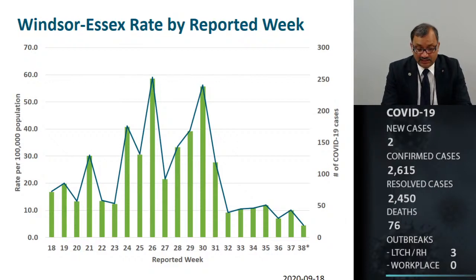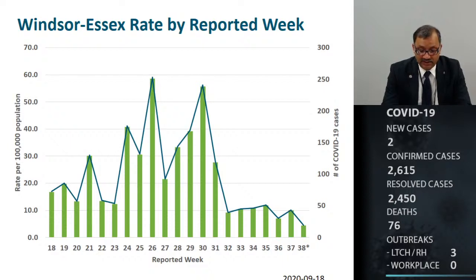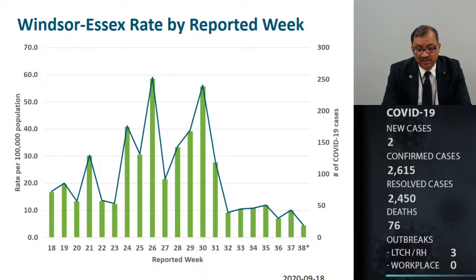Another way to look at it is the week-over-week incidence rates per 100,000 population from week 18, which is April 27th, to our current week 38. We saw a dramatic increase in cases from week 26 onwards, primarily attributed to the agri-farm sector, and now we are seeing a continued decrease as of week 38. Please note that week 38 is still in progress and ends on Sunday.